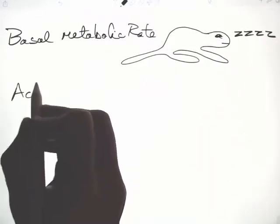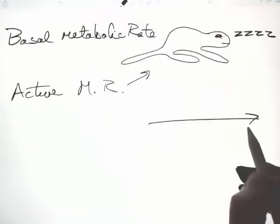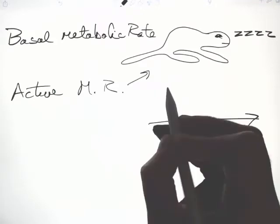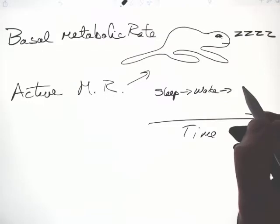Active metabolic rate is the metabolic rate of a free living animal or a human over time, including sleep-wake cycles.